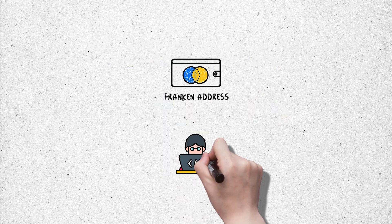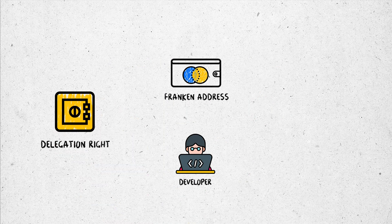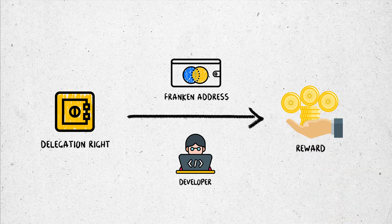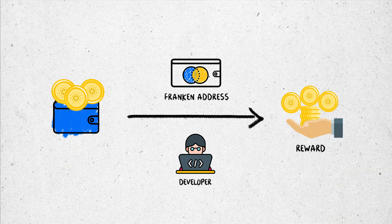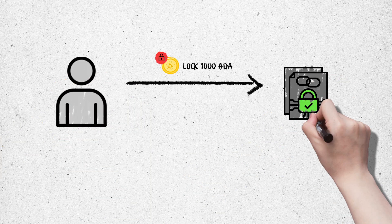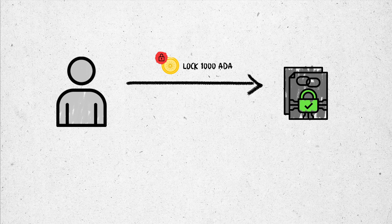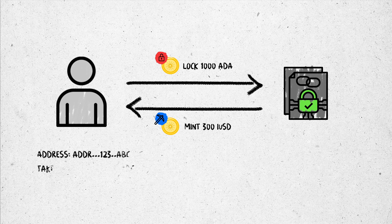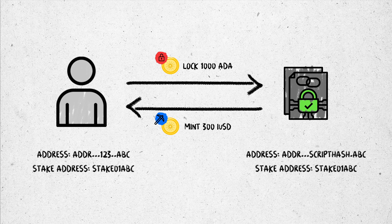With the Franken address, some developers can take advantage of delegation rights to receive rewards or help users maintain their stake rights while money is locked in the smart contract of an app. For example, a person sends 1000 ADA into a smart contract where the hybrid address contains the stake key of the user and mints 300 iUSD. The transaction is recorded with the first address as stake 01ABC holding 1000 ADA, and the received address written as stake 01ABC plus 300 iUSD.